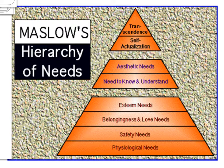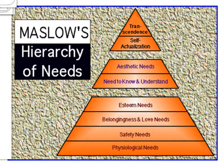Two additional levels were added later by Maslow and other researchers. The first is the need to know and understand: from childhood, humans are curious about their environment, how things happen and function, and throughout life we want to learn and understand the world around us. The second is aesthetic needs: everyone is interested in living in clean, tidy, beautiful places — that is why we have different fashions and trends, keep clean homes, and are drawn to attractive things.